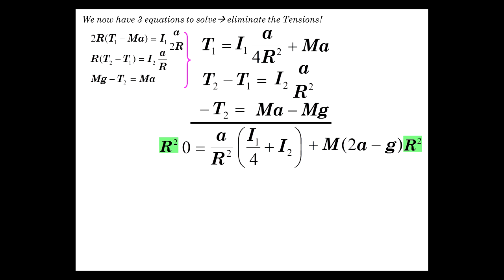What are we going to do with this? Well, we can multiply both sides by R squared. Left side, nothing happens. Right side, we eliminate this term. That's kind of nice. And we have A times I1 over 4 plus I2. And then R squared times M times 2A. There's that. So we're basically getting M R squared G by itself on the other side. So there's some algebra for you.